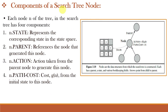In search algorithms, we need to track the different states we explore, and to do this we use nodes in a search tree. Each node n of a tree contains: state of n, which represents the corresponding state in the state space; parent of n, which points to the node that generated this node; action of n, which shows the action taken from the parent node to generate this node; and path cost of n from the initial state to this node, helping in cost-based evaluations.